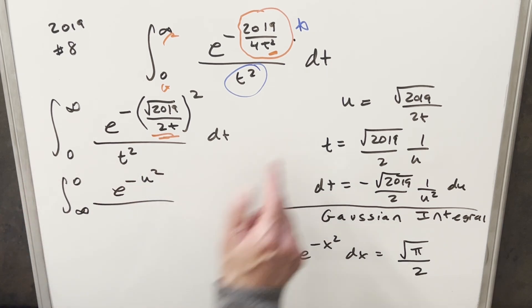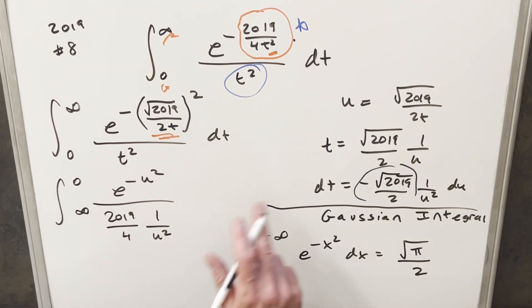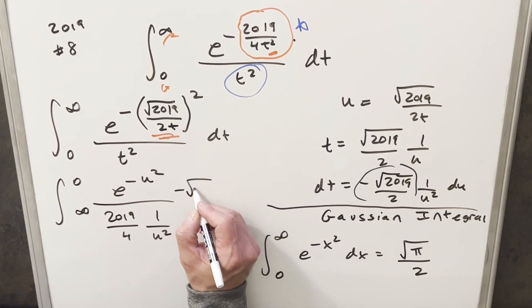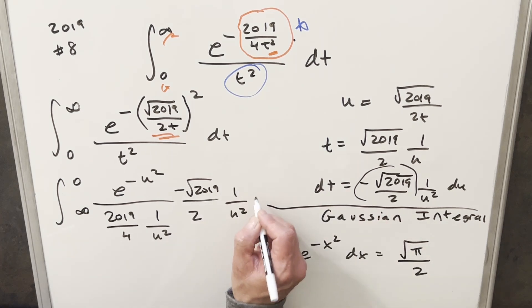Now for t squared, we'll just square this over here. This is going to become 2019 over 4, 1 over u squared. And next for our dt, we'll bring in all this stuff. So we're going to have minus square root of 2019. I'll bring the 2 here into the denominator. This is going to become 1 over u squared du.